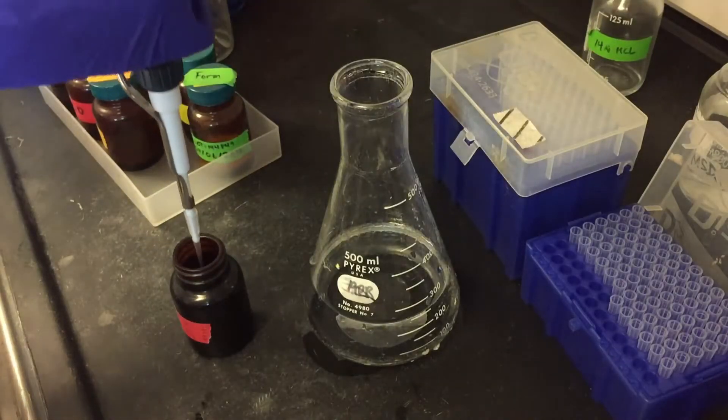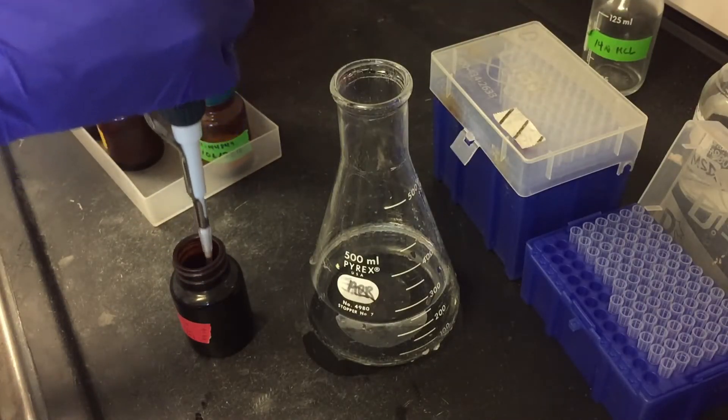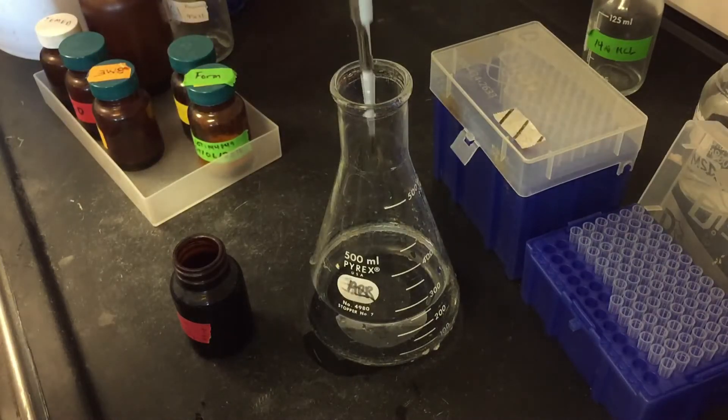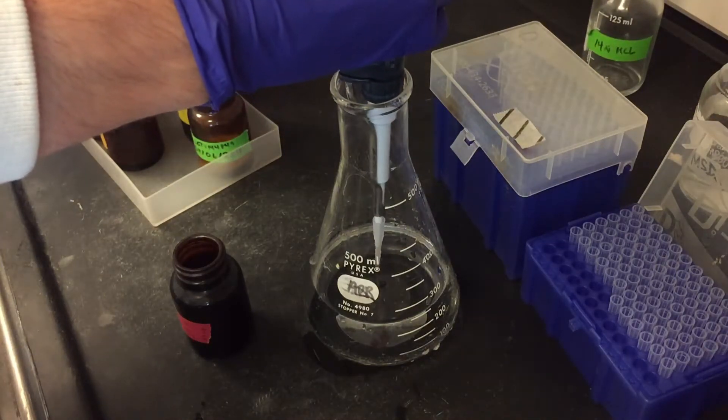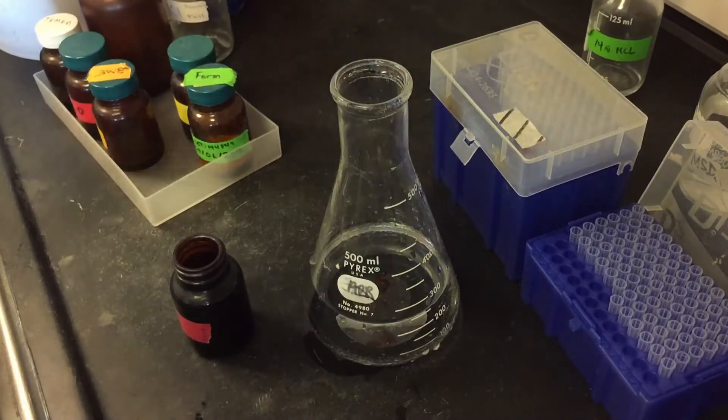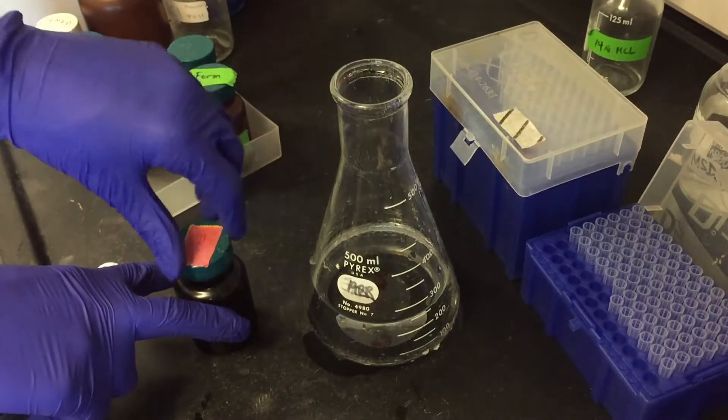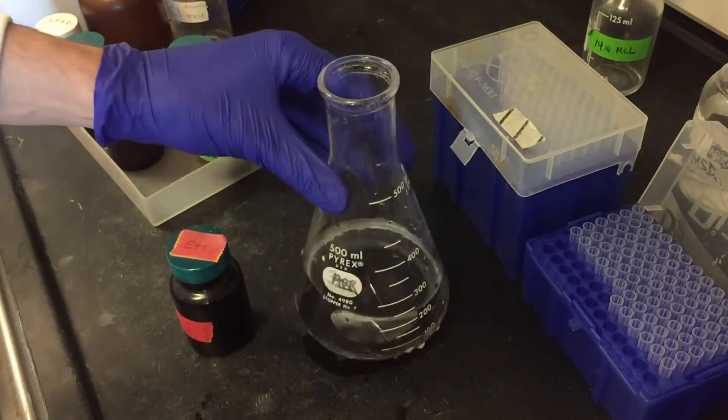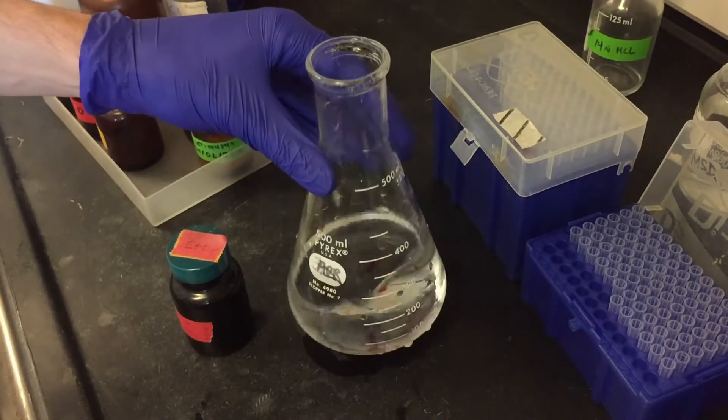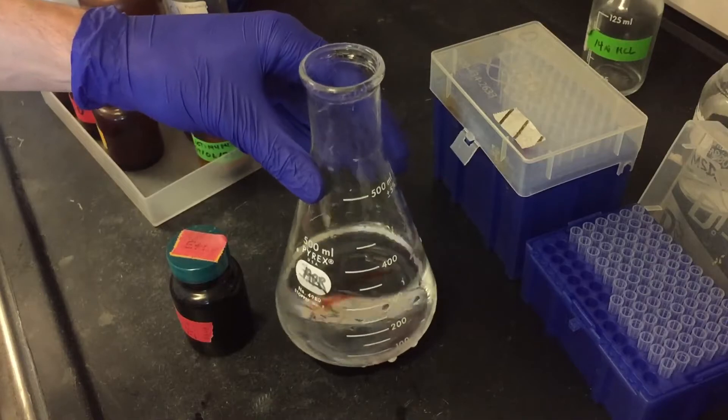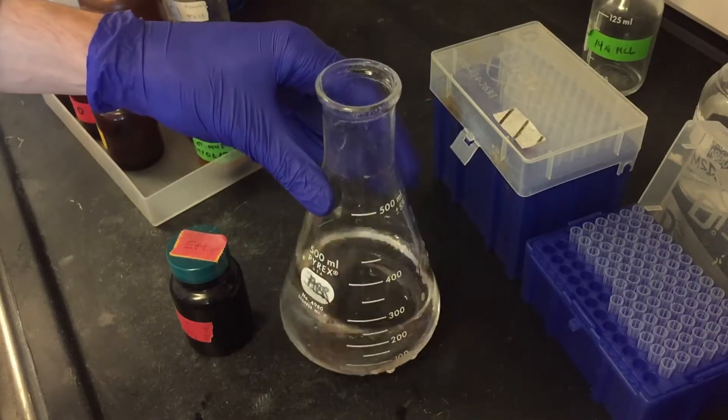Be careful when you're adding the ethidium bromide. As you can see it's really concentrated here and it is a carcinogenic intercalating agent meaning it binds to DNA, which is the reason we're using it. Another reason we're using it is because it's fluorescent under UV light which will allow us to visualize the PCR product in the gel.